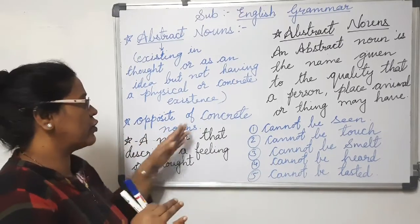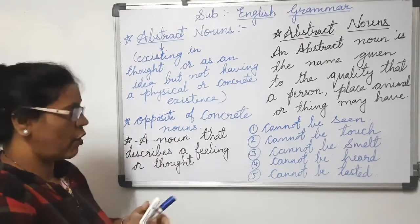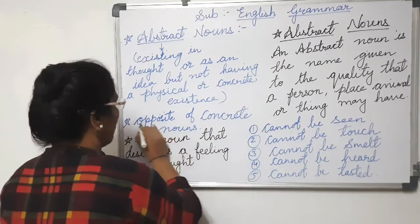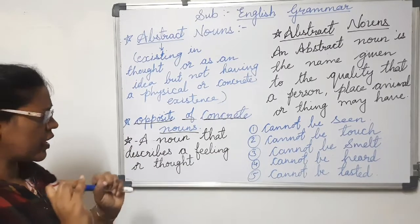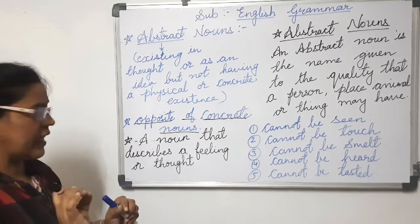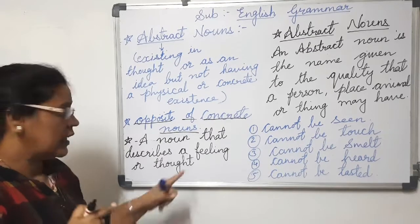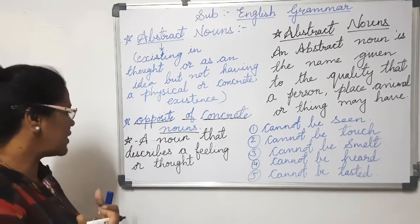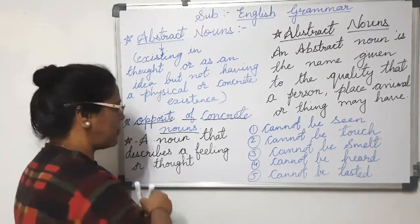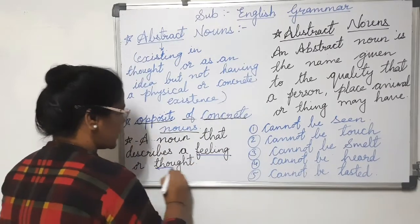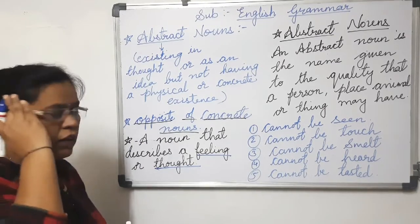Abstract noun is the opposite of concrete nouns — keep that in mind. In a very simple way, an abstract noun is a noun that describes feelings and thoughts. These feelings are my personal feelings, your feelings are your own, and the thoughts are what comes in your mind — what you are thinking right now.